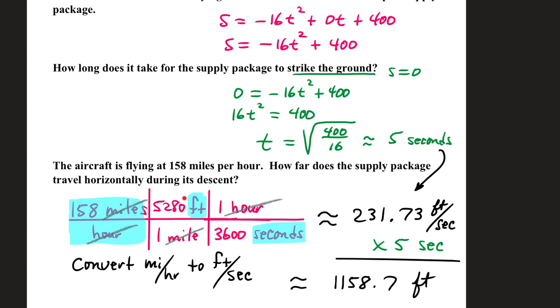If you stack these, each column is a truth. This middle column, 5,280 feet, is equal to one mile. This column, one hour, is equal to 3,600 seconds. You have to figure out how you arrange these so your miles will cancel, and your hours will also cancel. The units that don't cancel are feet and seconds. This is how we convert miles per hour into feet per second. 158 times 5,280 divided by 3,600. 158 miles per hour is approximately equal to 231.73 feet per second.